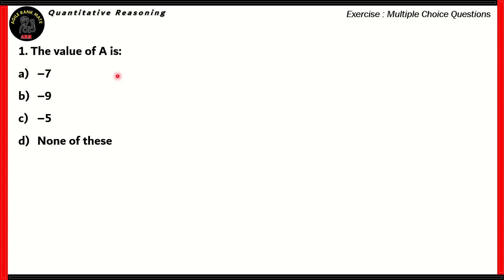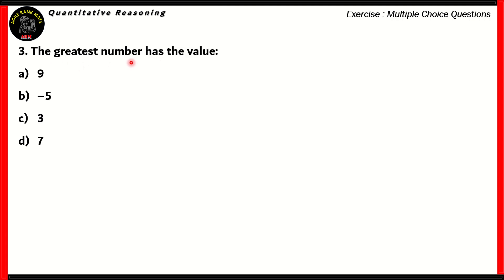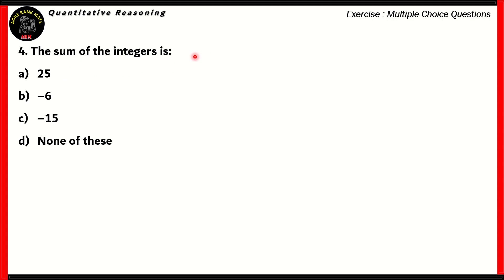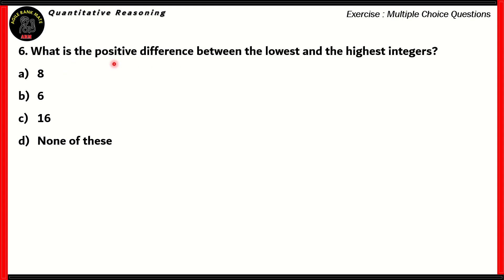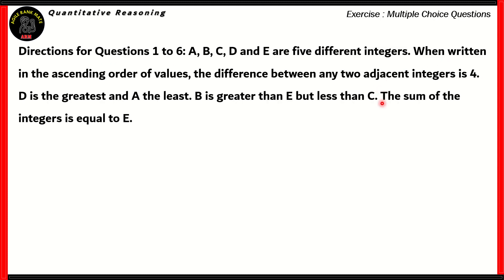So let's look at the questions. The first question is to find the value of A. The second question is to find the sum of A and B. The third question is: the greatest number has the value. The fourth question is to find the sum of the integers. The fifth question is to find the product of the integers. And the last question is the positive difference between the lowest and highest integers.